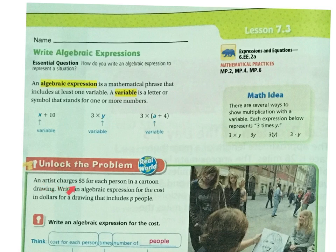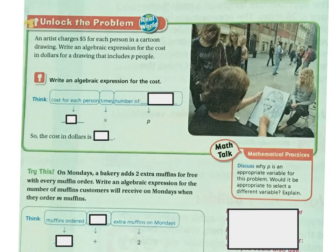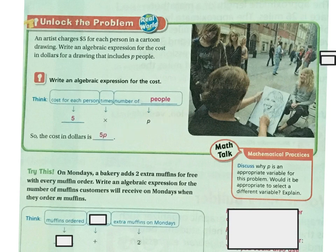Let's unlock the problem. An artist charges $5 for each person in a cartoon drawing. Write an algebraic expression for the cost in dollars for a drawing that includes P people. The cost for each person is $5 times the number of people, which is P. So the cost in dollars is 5P. Remember, you can write that a few different ways, like 5 times P.